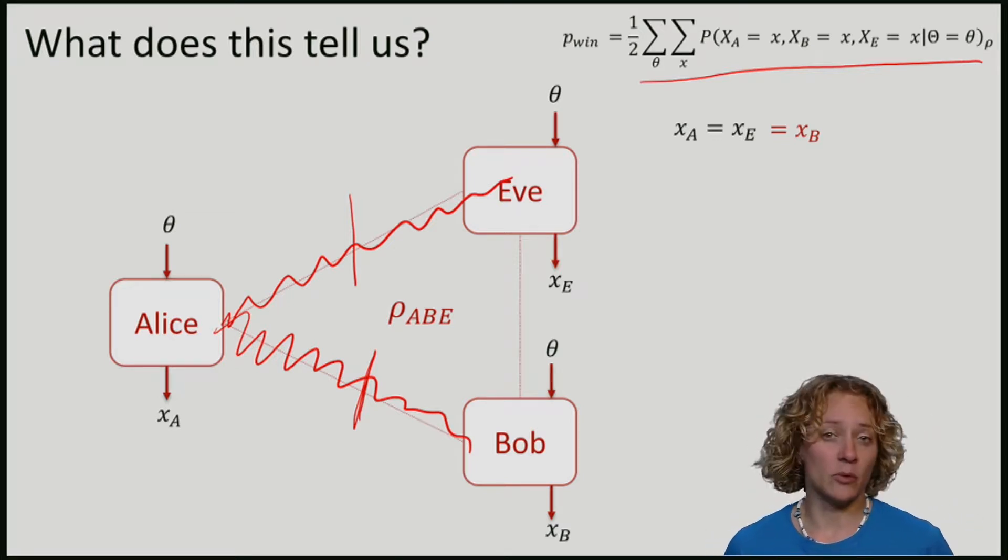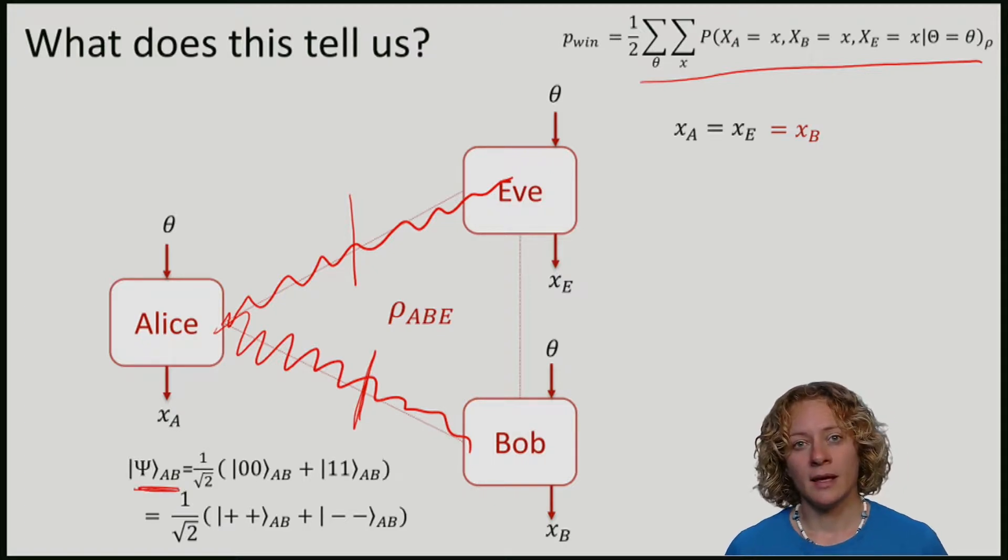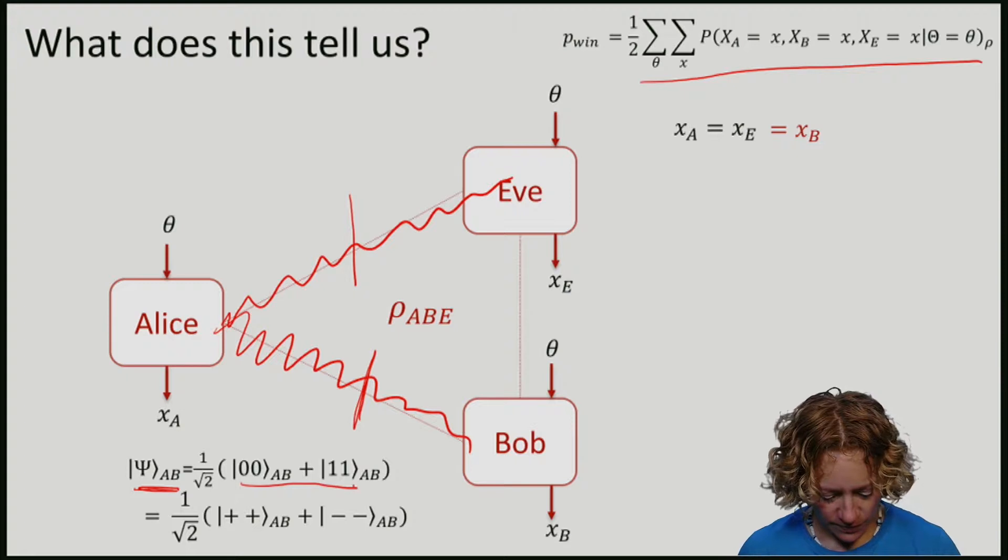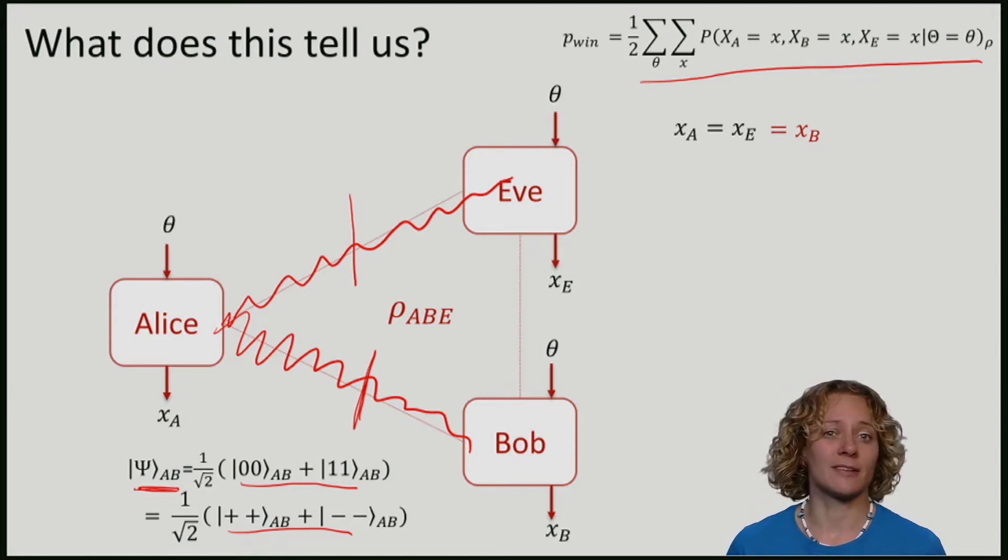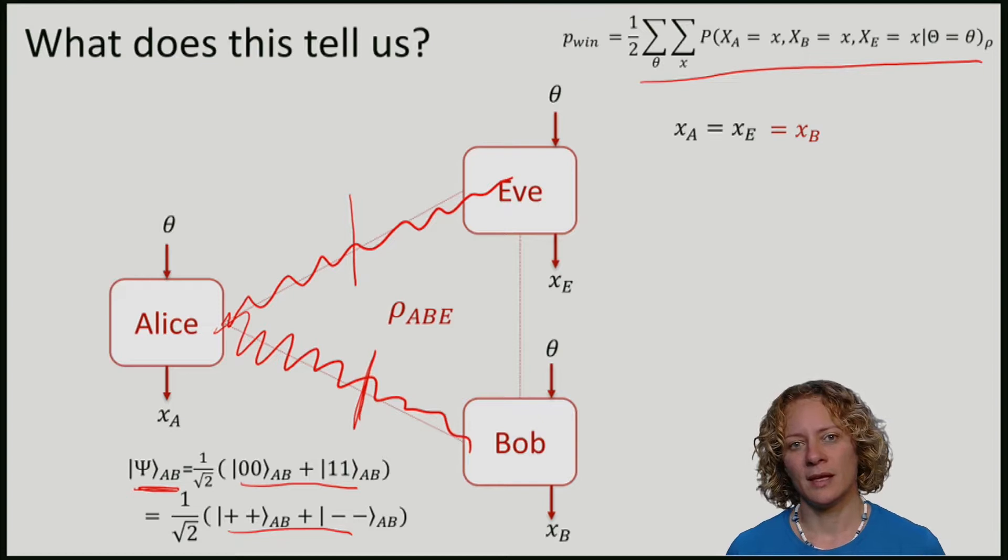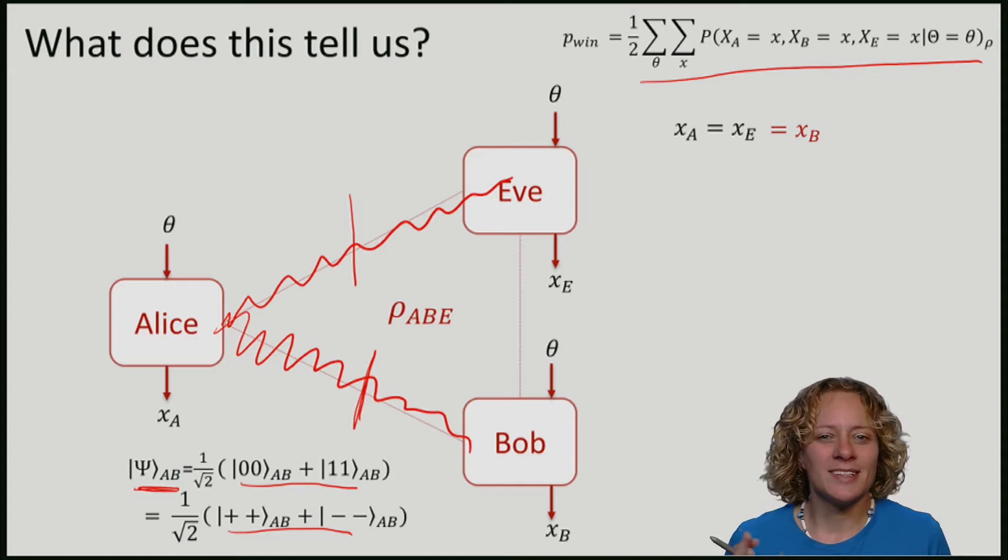It is based on the following observation. If Alice and Bob were actually maximally entangled, so the state that they share is of this form, then if they both measure in the standard basis, or they both measure in the Hadamard basis, they always get the same outcome. So Bob could, in this case, certainly give for both bases the right answer. The nice thing about this guessing game is that we don't even need to say exactly how entangled the state is, but nevertheless take advantage of the monogamy of entanglement.